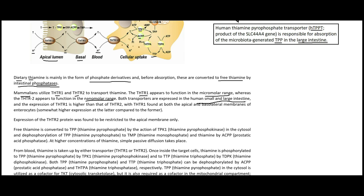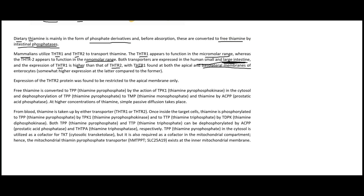Both transporters are expressed in the human small and large intestine. Expression of THTR1 is higher than THTR2, with THTR1 found at both the apical and basolateral membranes of enterocytes. THTR2 protein expression is restricted to the apical membrane only. Free thiamine is converted to thiamine pyrophosphate by the action of TPK1 — thiamine pyrophosphokinase — in the cytosol.